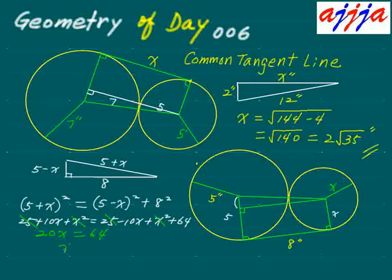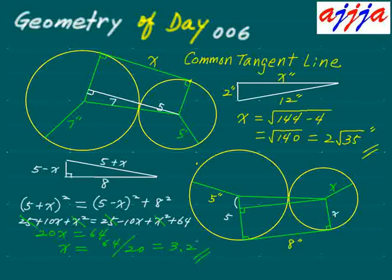So x equals 64 divided by 20, which is 3.2 inches. That's it! The small circle has a radius of 3.2 inches. Since the big circle is 5 inches and the small one is 3.2 inches, that makes sense.